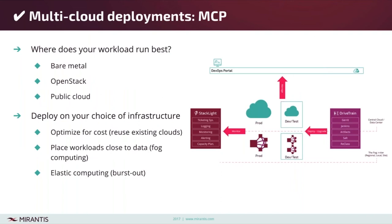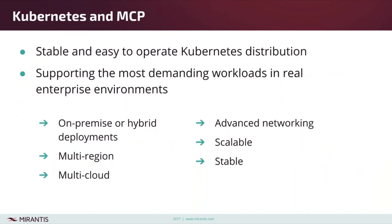Multi-cloud deployments are really what containers-as-a-service is all about. Based on where your workload happens to run best, you get the choice of where to deploy that Kubernetes cluster. Our focus is on giving you a stable and easy-to-operate Kubernetes distribution that works wherever you need it to work. If you have an application traditionally developed on OpenStack and need burst-out capability to AWS, having developed in the Kubernetes framework or using Helm charts, you know that you can easily deploy the same type of Kubernetes cluster on different cloud infrastructure and move your workload around based on whatever policies you have.